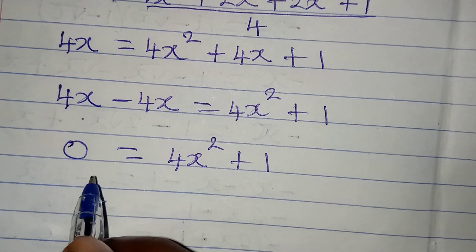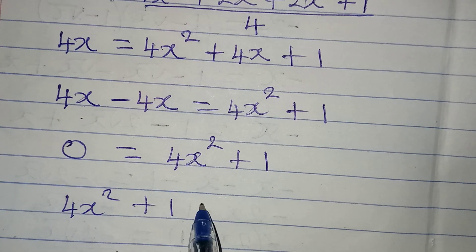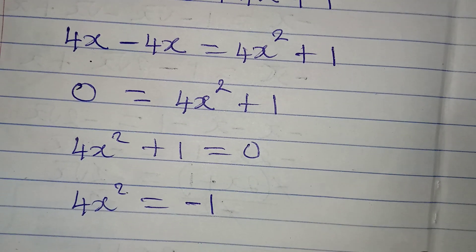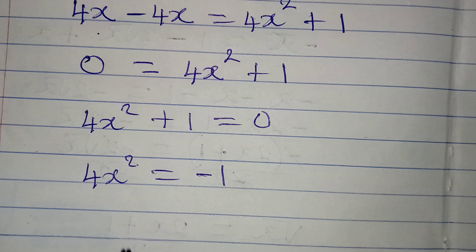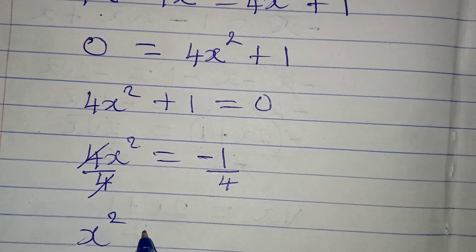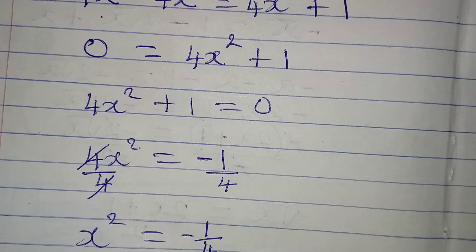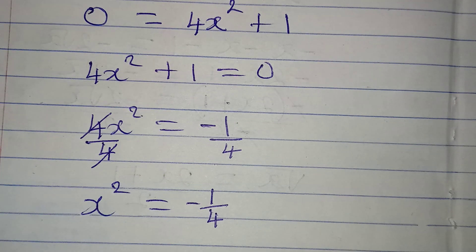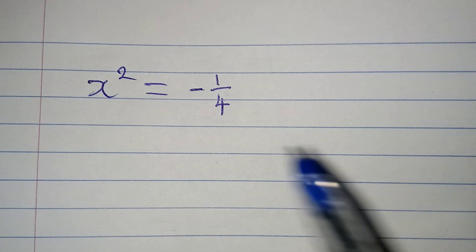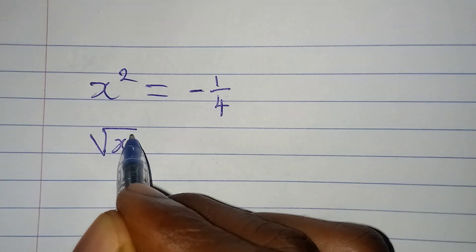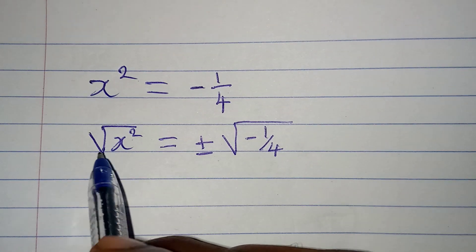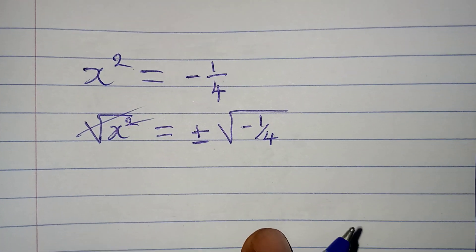Rearranging: 4x² + 1 = 0, so 4x² = -1. Dividing both sides by 4, x² = -1/4. Remember we are not looking for x², we are looking for x, so I will take the square root of both sides: √(x²) = ±√(-1/4).